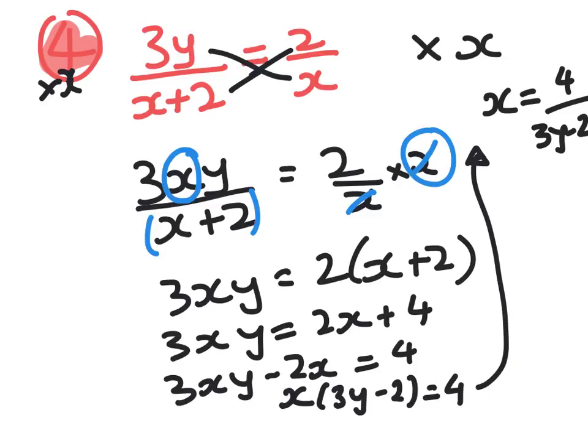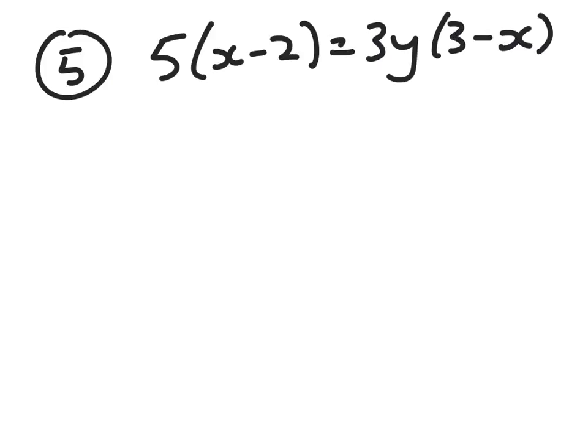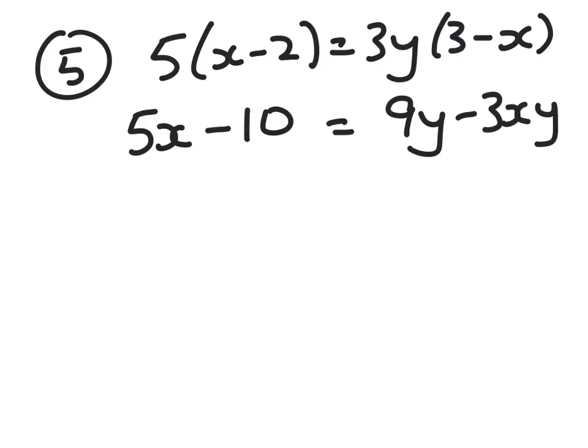Let's take a look at the last one, which is another one that's a bit different. Number 5. Right, no fractions here. So there's 5x minus 2 equals 3y into 3 minus x. All we have to do is expand both sides and collect up terms with x. So this is actually in some ways easier. There we go.